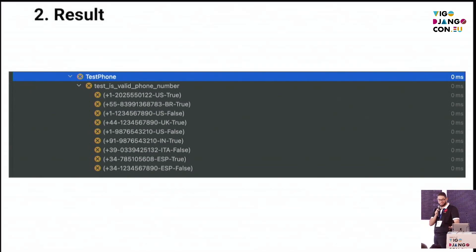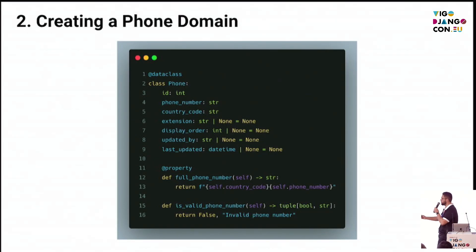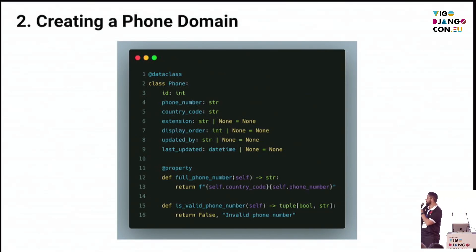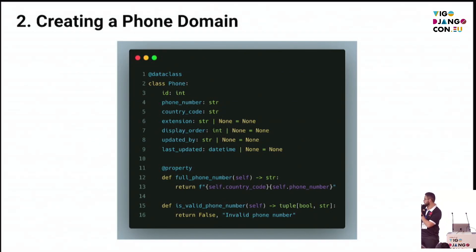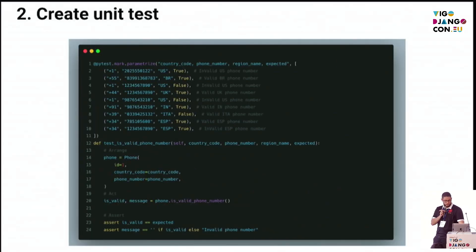Of course, the result is failed. Right now I'm starting to create the phone domain — just an example. The method I would like to test is 'valid phone number'. I'm just returning, for now, false and an invalid phone number message. Return to the test.